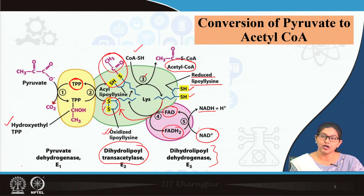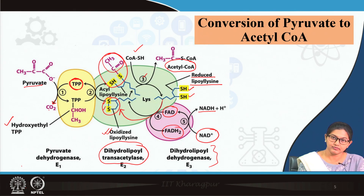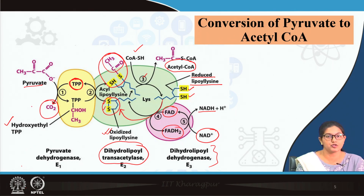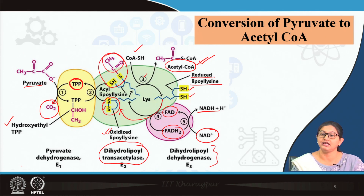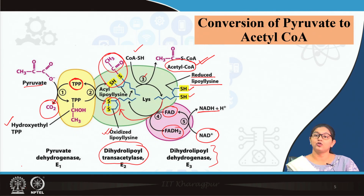At the end of the reaction, pyruvate undergoes decarboxylation releasing carbon dioxide, produces acetyl coenzyme A, and also produces NADH as a reducing equivalent. This acetyl coenzyme A then enters the TCA cycle proper.